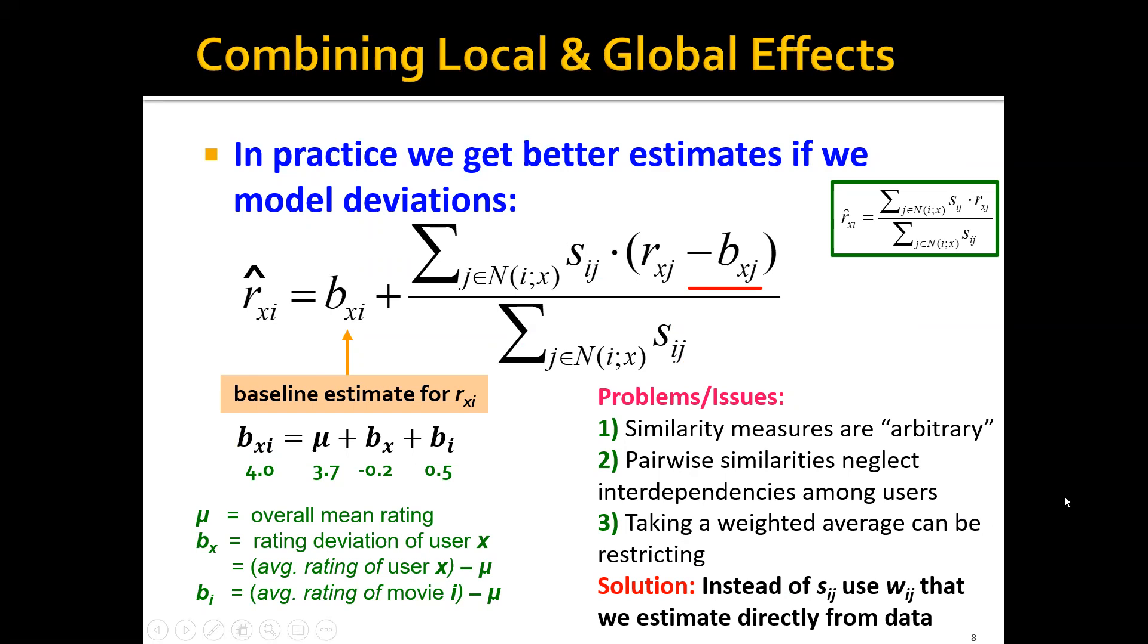And the third problem is that this is actually taking a weighted average, and therefore it can be quite restricting because the weight is actually computed exactly using the similarity measures. And the solution to the third problem is that instead of using S_ij, we can use W_ij, which is the weight we're going to estimate directly from the data.